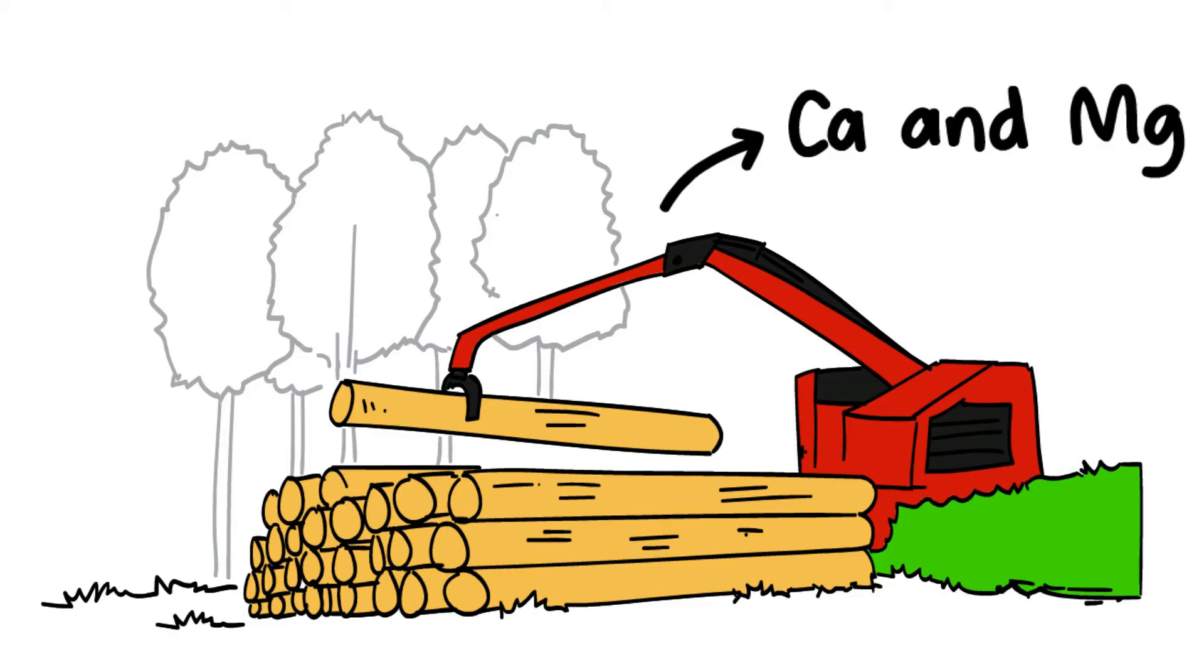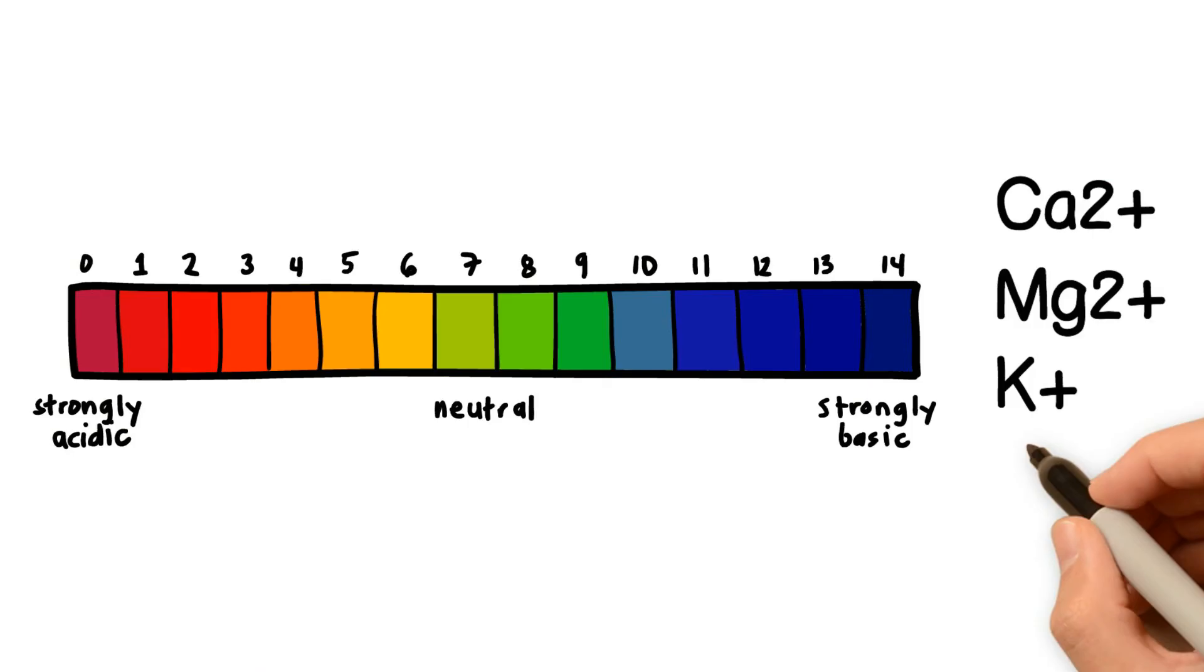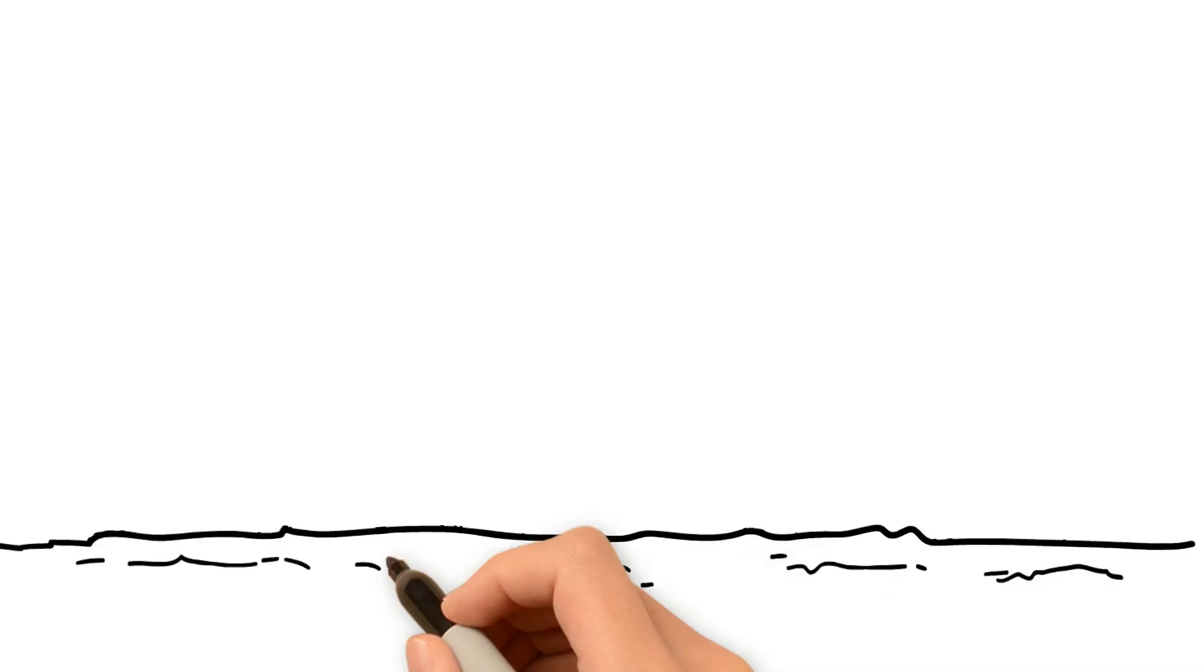The pH of these nutrients is basic, so they also work as buffers, preventing the soil from becoming acidic. These nutrients are also important to humus, as they support the well-being of the microbes involved in the nutrient cycle.